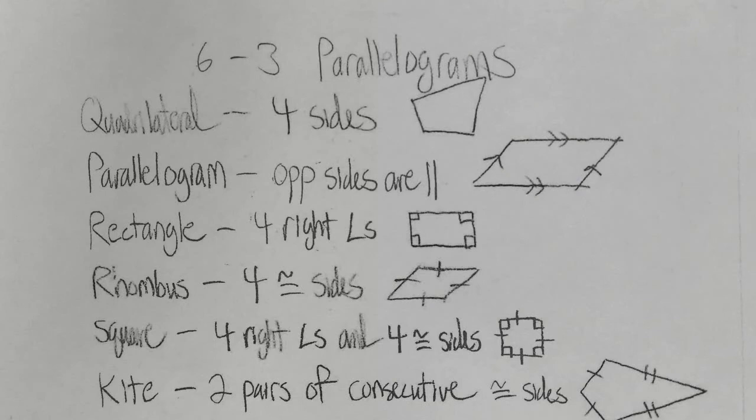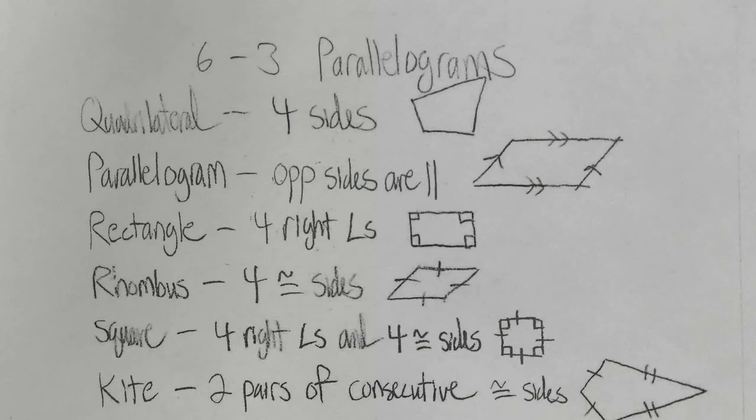In this section 6-3, we're going to be looking at parallelograms. We begin this section by identifying all the different types of four-sided figures, and that will set the stage for the rest of the unit, because from this point forward each section is going to focus on a certain four-sided polygon. We want to get the overview of all of them first, and then the second half of the lesson will go into parallelograms specifically.